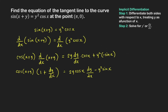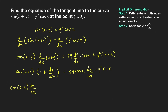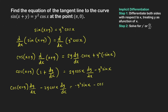Now we isolate all terms with dy/dx. We have cosine of x plus y times dy/dx from the left-hand side, and we move the 2y cosine x times dy/dx term to the left-hand side, giving: cosine of x plus y times dy/dx minus 2y cosine x times dy/dx, equal to negative y squared sine x minus cosine of x plus y. Factoring dy/dx gives: cosine of x plus y minus 2y cosine x, times dy/dx, equal to the right-hand side.